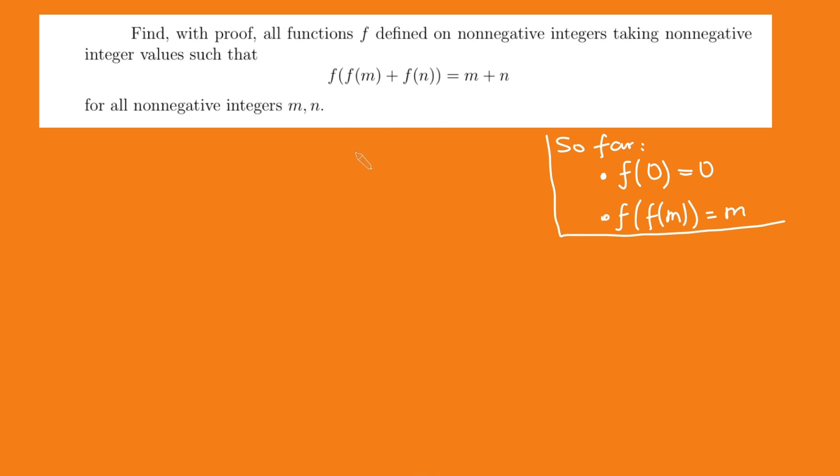What we can do now is substitute in n is 1. And see what happens there. So we get f of m plus f of 1 equals m plus 1. And again, m is just an arbitrary integer here. And we get f of f of m plus 1 equals just m plus 1. And well, we can call f of 1 something. Let's just give it a name. Let's call it b.